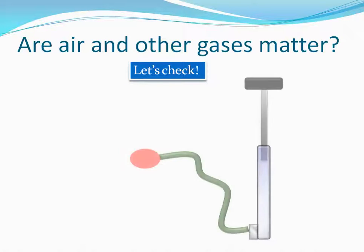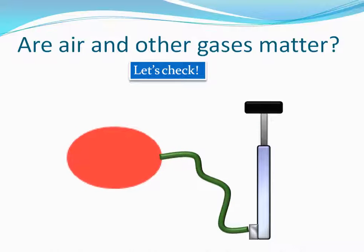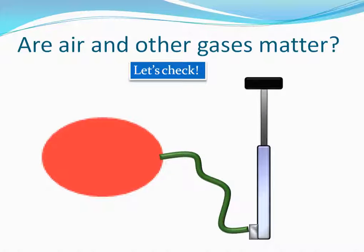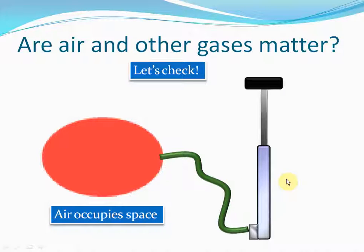To conduct this experiment, let's take a bicycle pump. Let's attach this bicycle pump to a balloon that's not inflated — a small balloon like this. Now let's try to fill air inside the balloon. We are filling air inside this red balloon. As you can see, after we filled air inside the balloon, the balloon has now become inflated. It occupies much more space compared to the space it was occupying earlier. What is this thing inside the balloon that has increased the space? It is air. And this tells us that air occupies space. So definitely air fulfills at least one condition of matter — air occupies space.